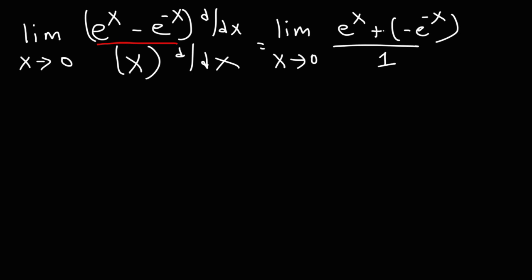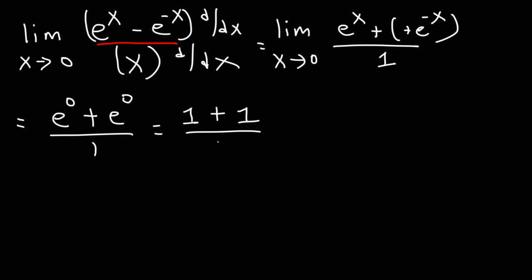The two negative signs cancel, so we can change that to a positive sign, giving us e to the x plus e to the negative x. At this point we can use direct substitution: e to the 0 plus e to the 0, divided by 1. e to the 0 is 1, so we have 1 plus 1 divided by 1, which is 2 over 1. So the answer is 2.